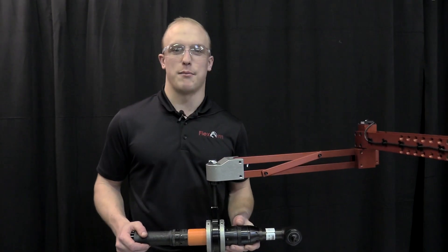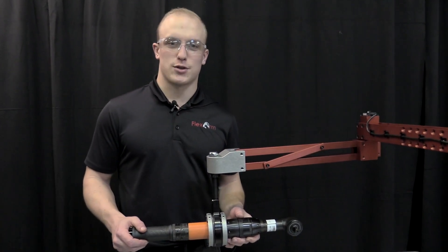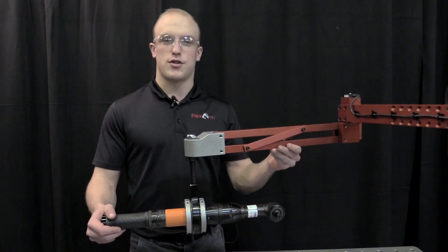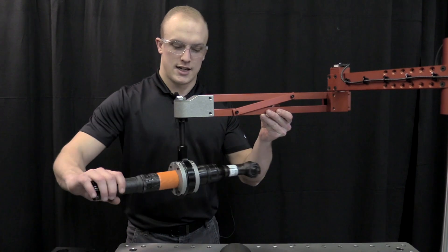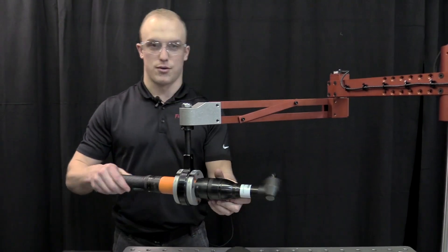This customer is tightening bolts around an axle, and this mount has two 360-degree rotations: one about the vertical axis and the other through the tool.